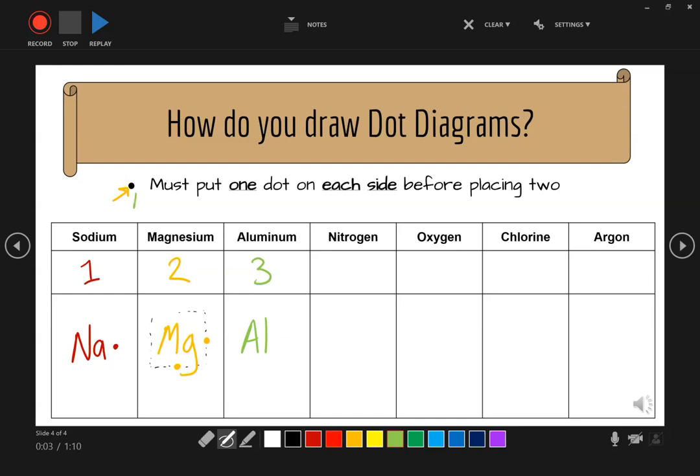So again, remember that you have to put one dot on each side before placing two. So we're going to go one, two, three. And remember that we have an imaginary box, and my dots are on the sides of the box.